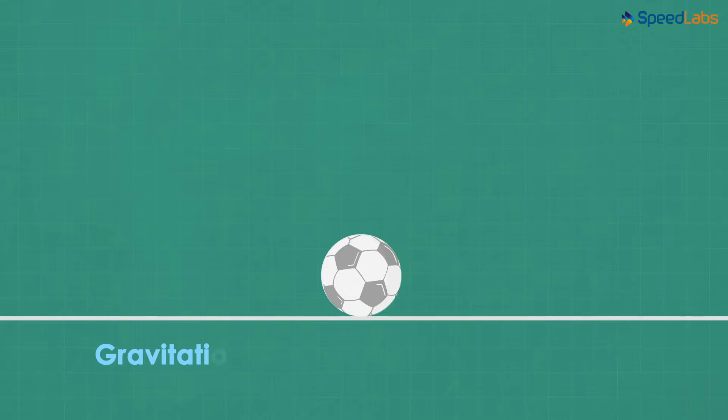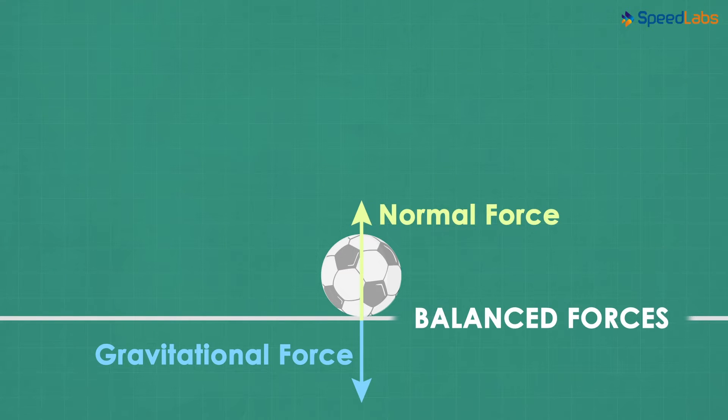There is a gravitational force which is trying to pull the ball towards the center of the earth. And the ground is applying an equal force exactly in the opposite direction. This force is called the normal force. Because these two forces are balanced, they do not change the position of an object. The net force acting on the ball is zero.